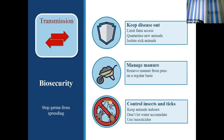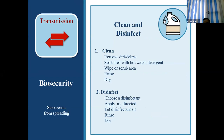At the transmission level, biosecurity measures include keeping disease out by limiting farm access, quarantining new animals, isolating sick animals, managing manure and removing it from pens regularly, controlling insects and ticks, keeping animals indoors, avoiding stagnant water that harbors mosquito vectors, and using insecticides. Clean and disinfect by removing dirt and debris, soaking with hot water and detergent, rinsing, and drying. Choose a suitable disinfectant, apply as directed, and allow it to sit before rinsing.